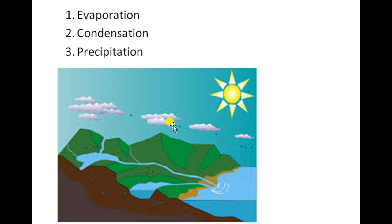The third process is precipitation, which happens in the morning. Condensation causes water to be made of solid. The precipitation impacts the water cycle, and we get precipitation from the water.